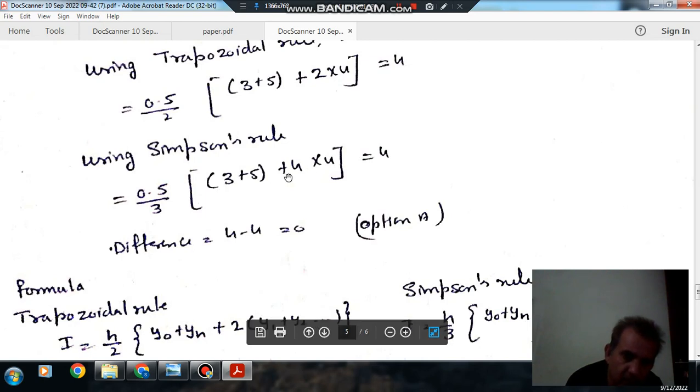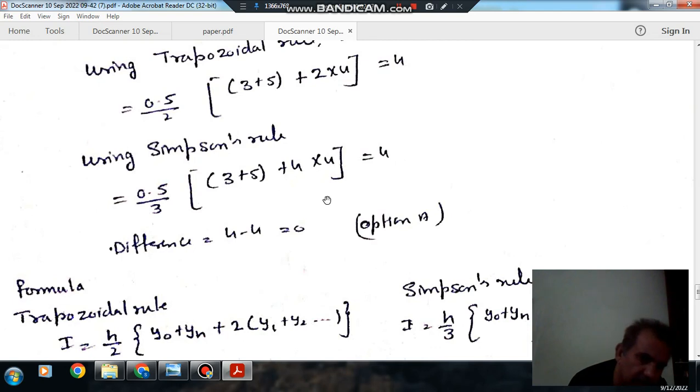...8 plus 16, that is 24. 24 times 0.5 is 12 divided by 3, that is 4.